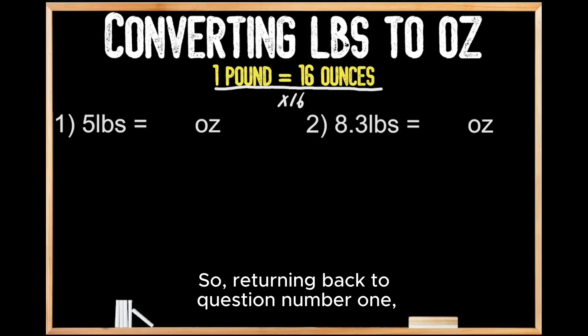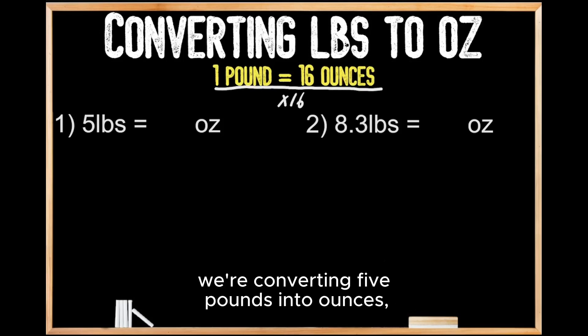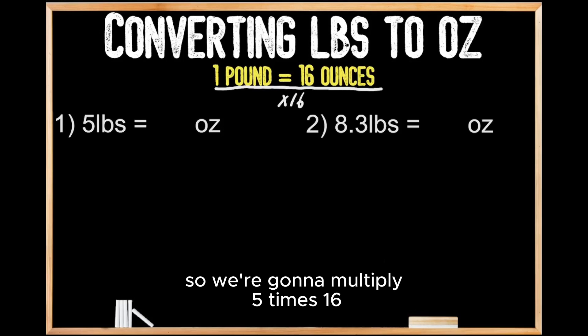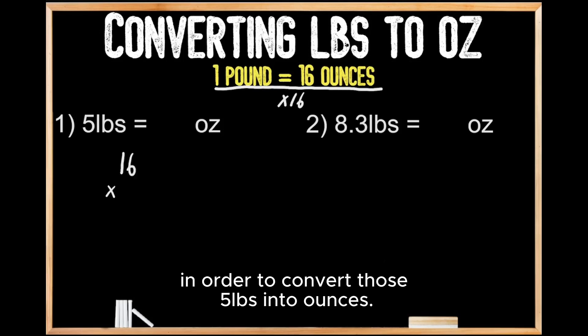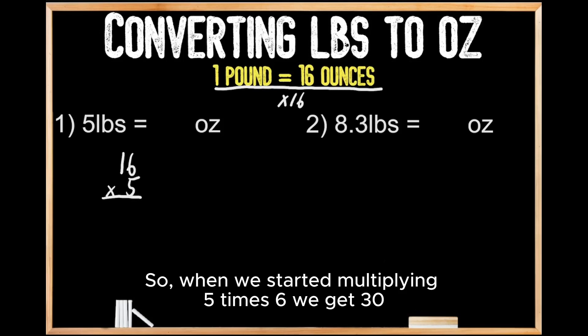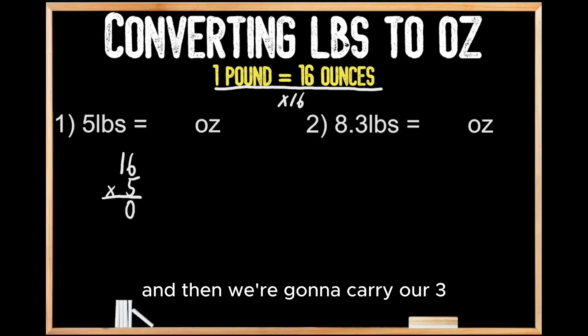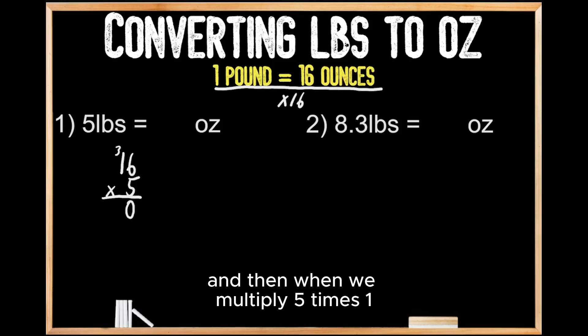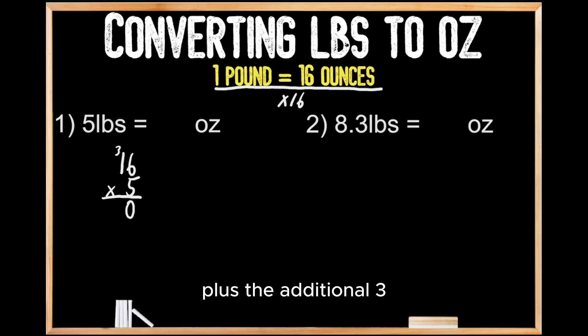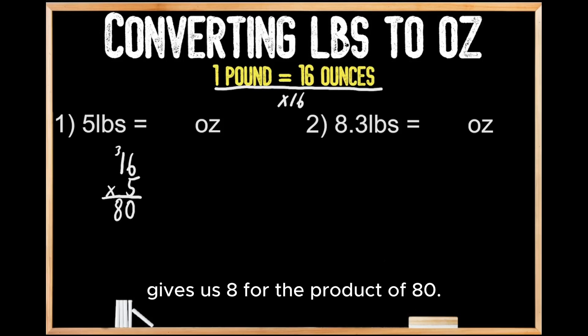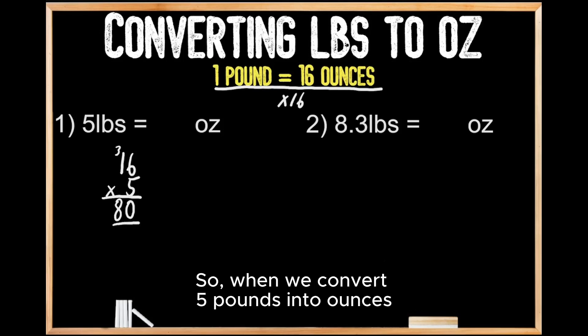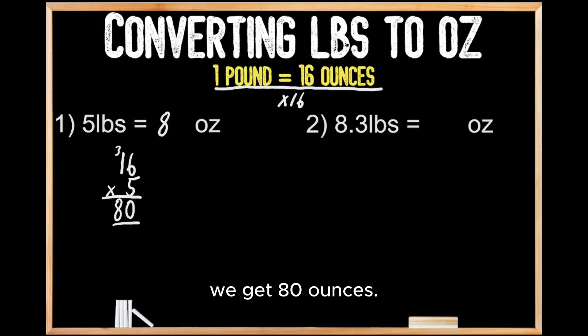So returning back to question number one, we're converting five pounds into ounces. We're going to multiply five times 16. When we multiply five times six, we get 30, so we write our zero and carry the three. Then when we multiply five times one, we get five, plus the additional three gives us eight, for the product of 80. So when we convert five pounds into ounces, we get 80 ounces.